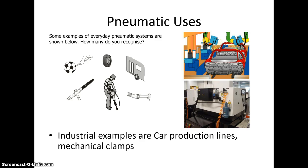Some examples of everyday pneumatic systems include a soccer ball and a pump used to pump up a soccer ball. You also have a jackhammer, the doors to a bus or a train, which use a pneumatic system. Industrial examples include car production lines and mechanical clamps.